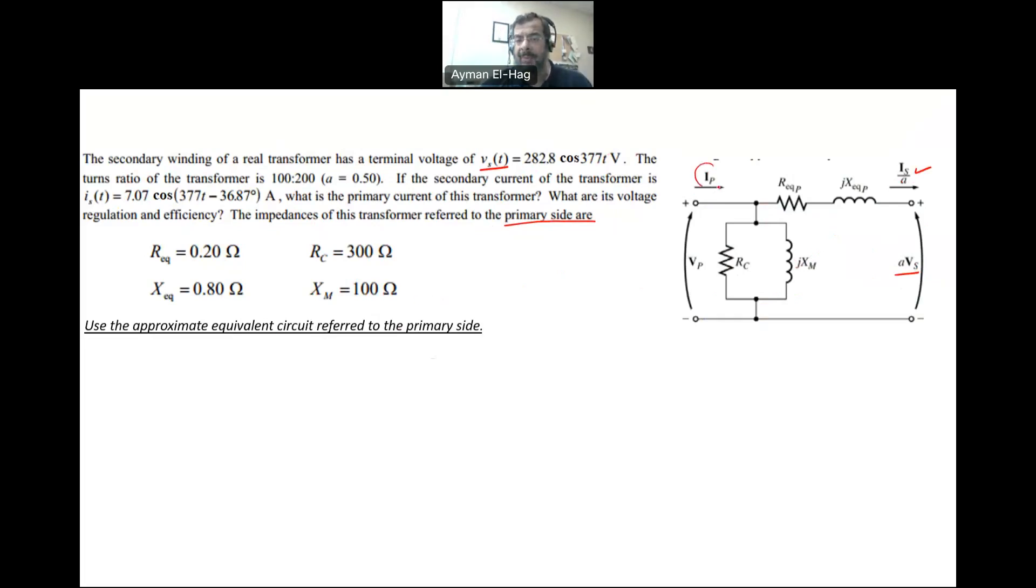The first thing we want to find is the primary current. First, we need to convert everything from the peak value to the RMS value. Our Vs is equal to the peak value 282.8 divided by root 2, and this would be an angle of 0. This is equal to 200 angle of 0. Now, the voltage in the model referred to the primary is AVs. My AVs will equal to the A is 0.5 times the 200 angle of 0, and this is giving me 100 angle of 0.